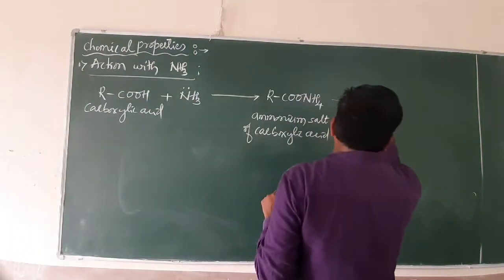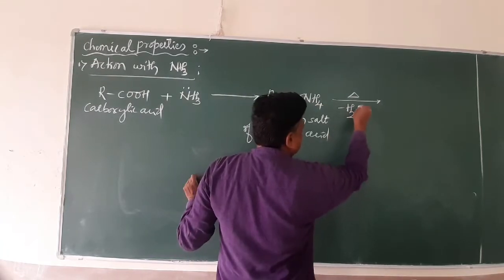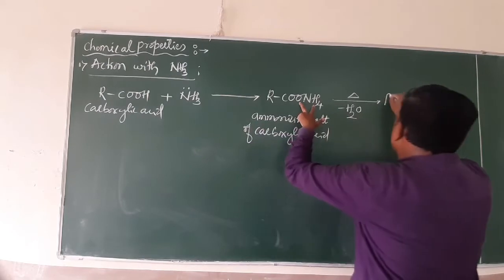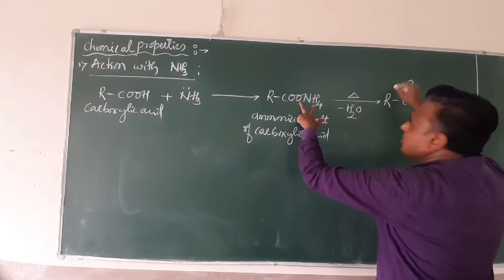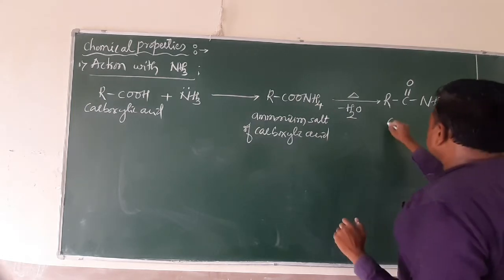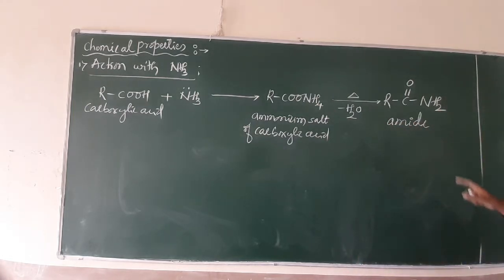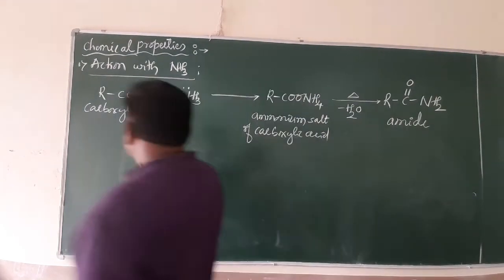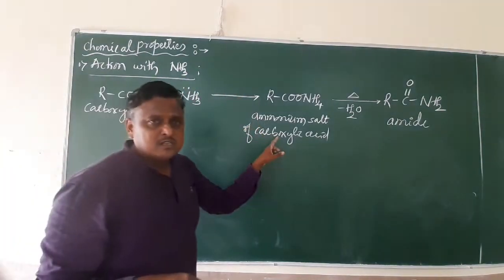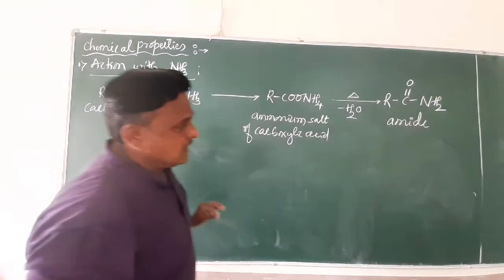This ammonium salt, when ignited carefully, undergoes loss of water — removing two hydrogens and one oxygen — to form R–CO–NH₂. This product is an amide, specifically an alkylamide. So carboxylic acid reacts with ammonia to form a salt, which upon heating loses water to form an amide.